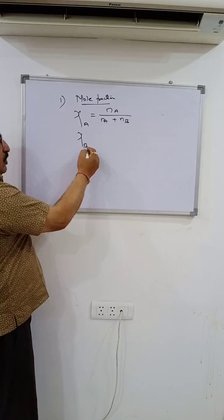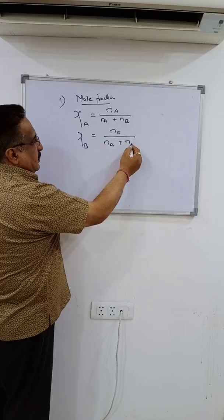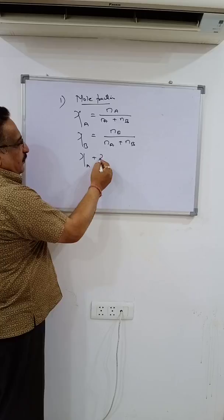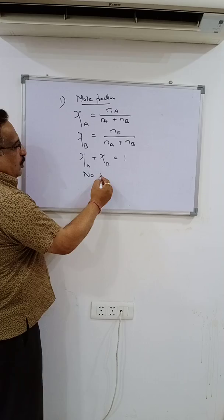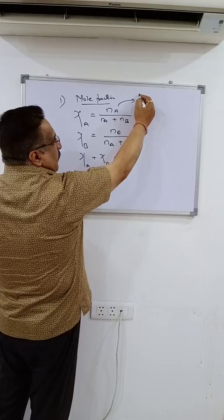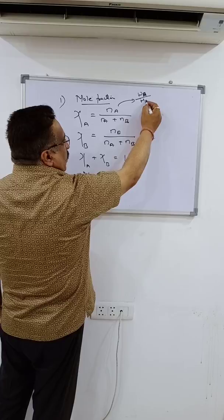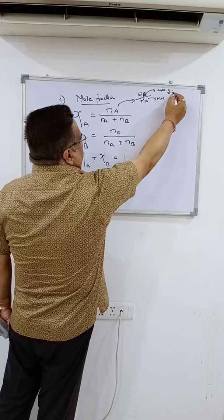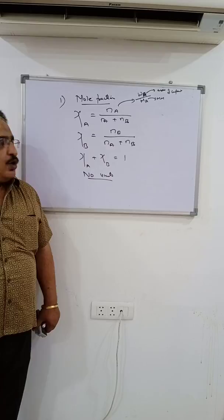The sum of mole fractions is always unity. Mole fraction has no units. The number of moles is calculated as mass of component (w_A) upon molar mass (M_A). Mass upon molar mass gives the number of moles, and it has no units at all.